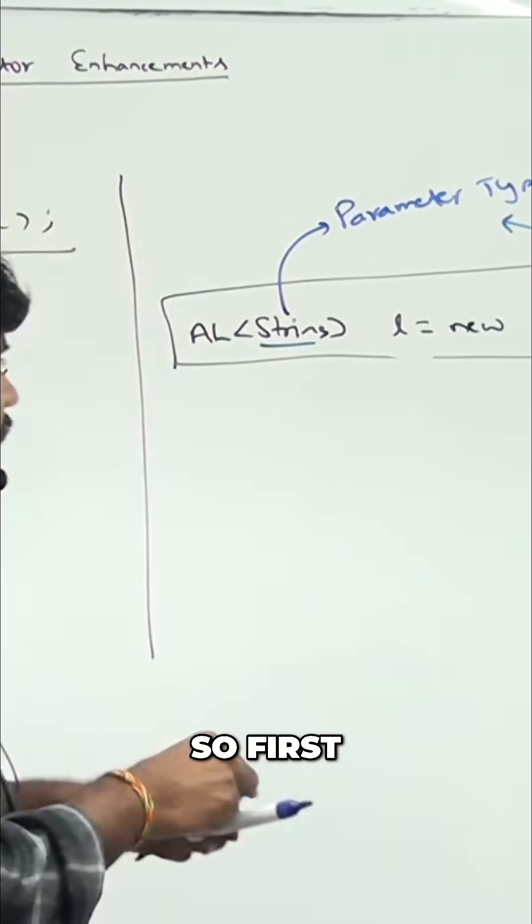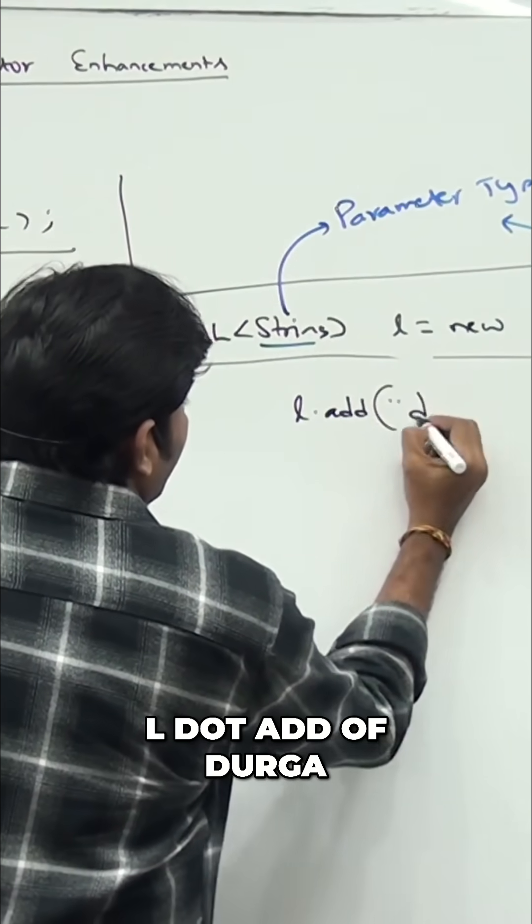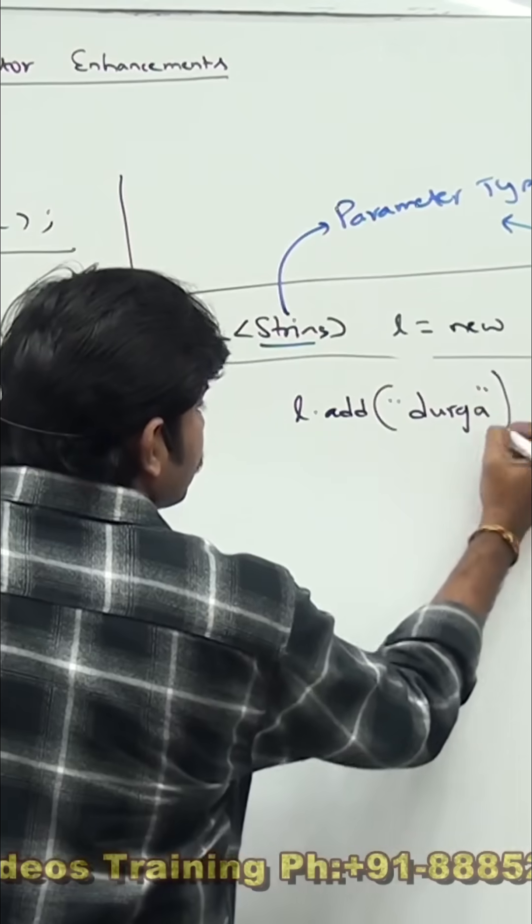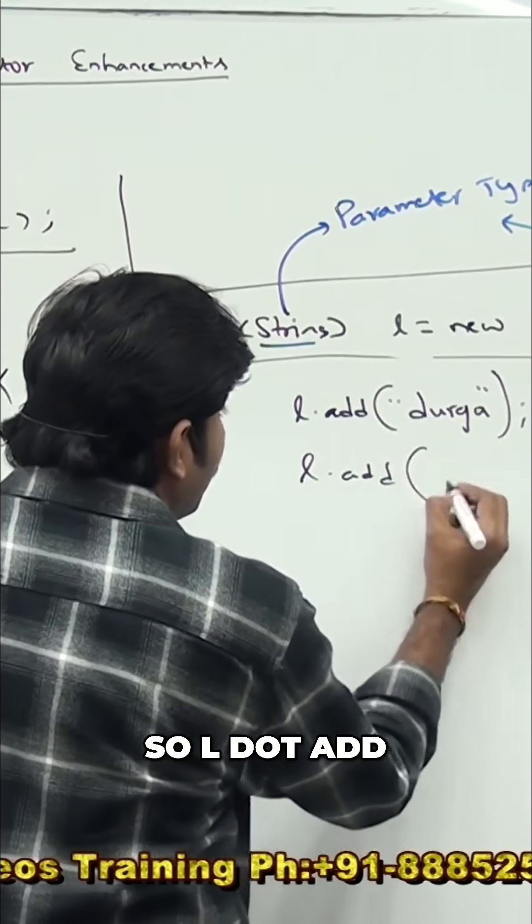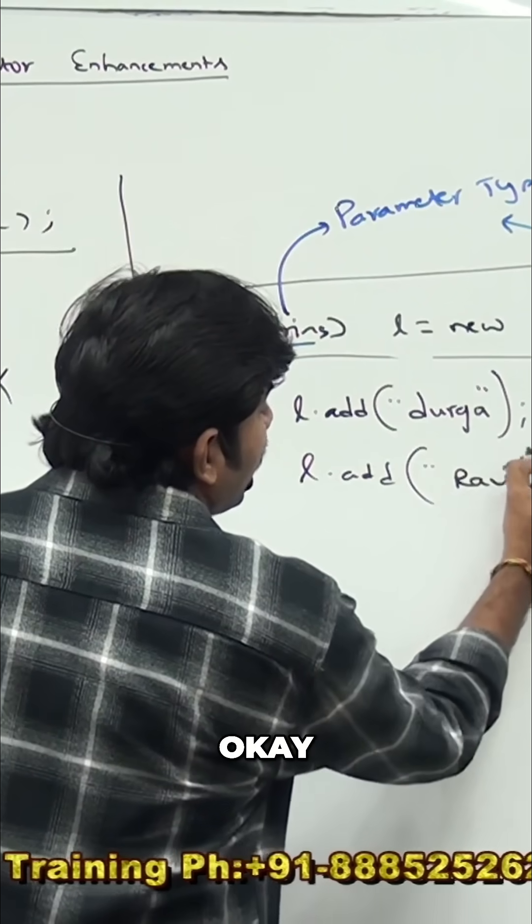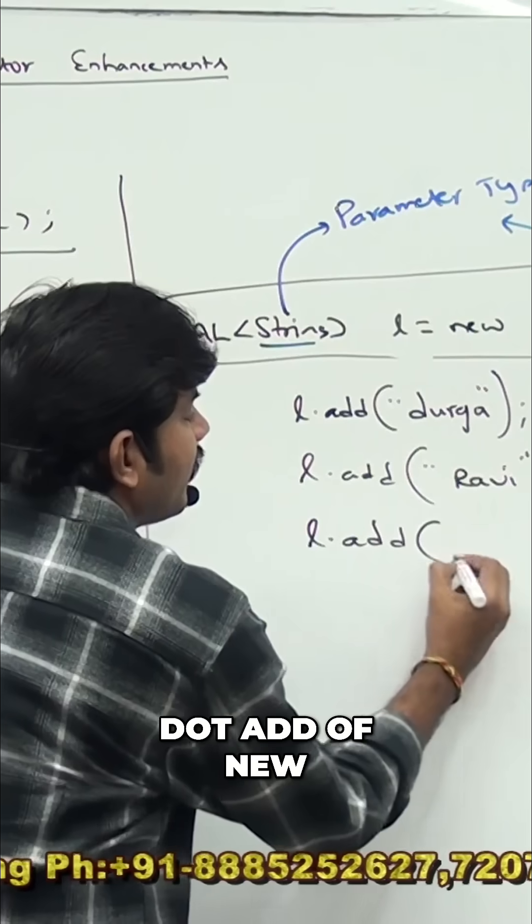Remember this? Let me consider l.add of Durga, l.add of Ravi - valid. Let me take l.add of...